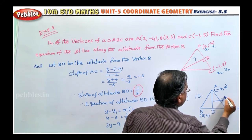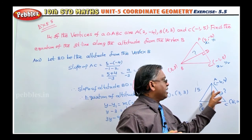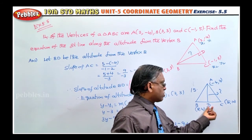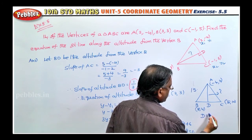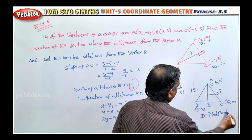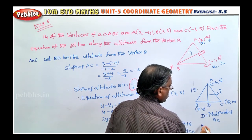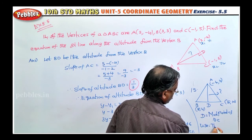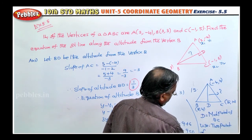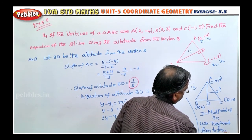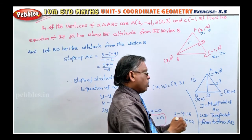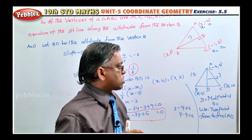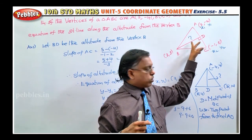They are asking for the equation of median AD. A median is a straight line drawn from the vertex to the midpoint of the opposite side. So D is the midpoint of BC. Once you find D, use two-point form to find the equation of median AD. For altitude we use the slope/perpendicular concept; for median we use the midpoint concept.